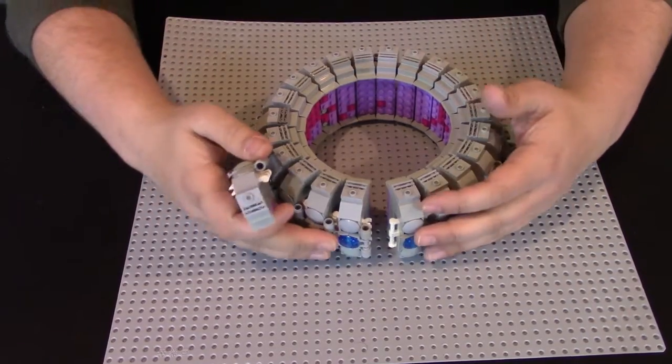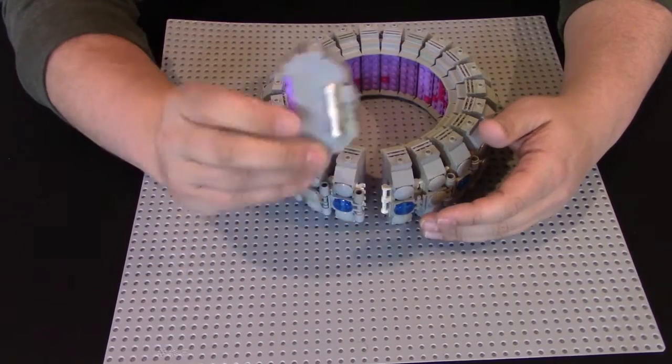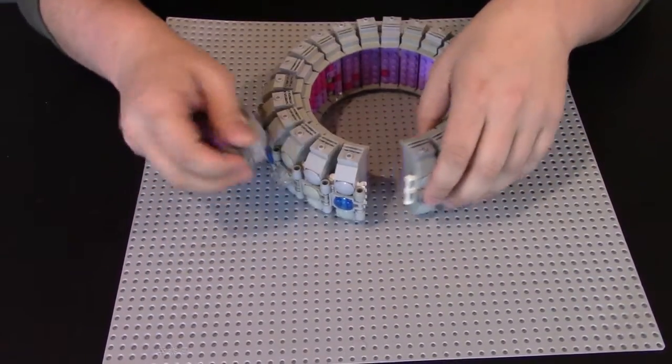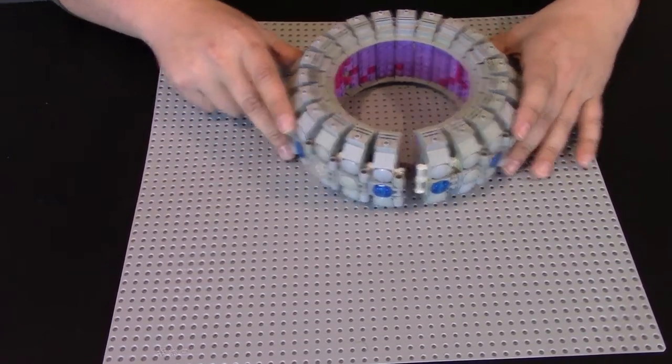Okay, as we said before, it's 23 identical rings. We took one out and we're going to show you how to build it. You just got to repeat that 23 times and then they would all clip together to form the ring. Alright, let's get started.